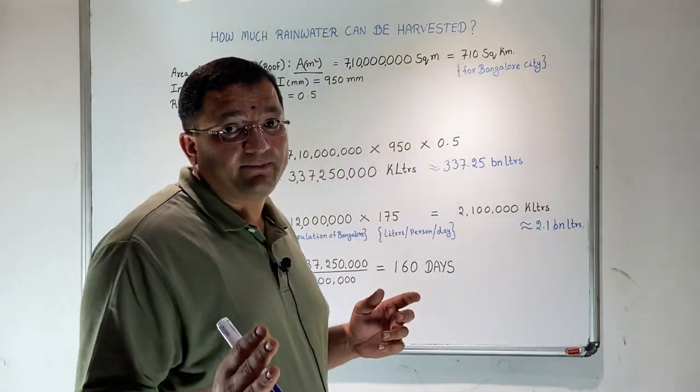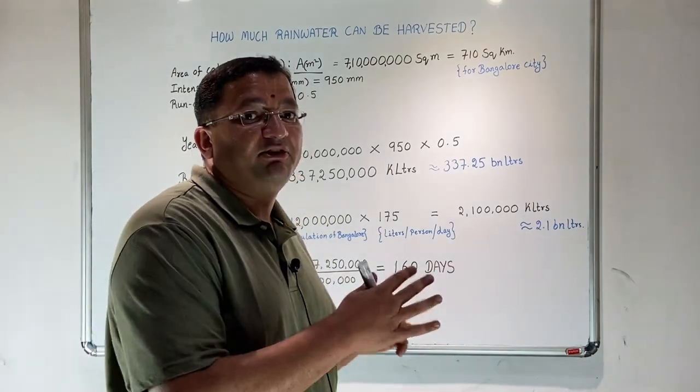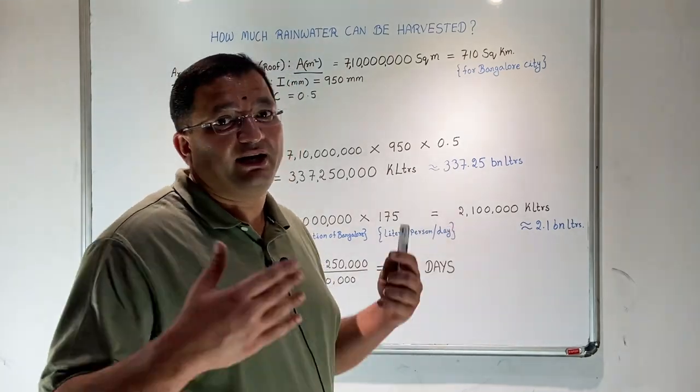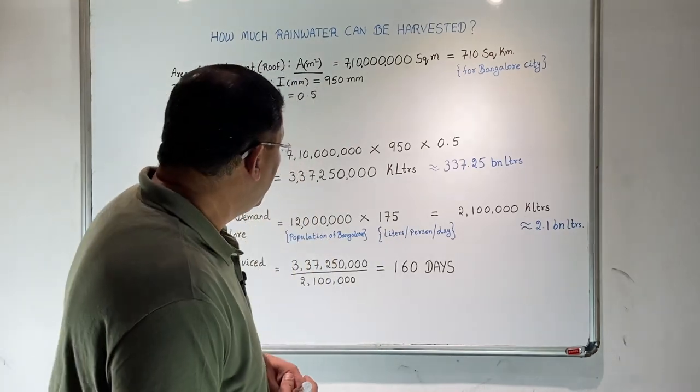50 liters of water actually runs off. The other 50 liters goes as spillage, evapotranspiration, losses, leakage, etc.